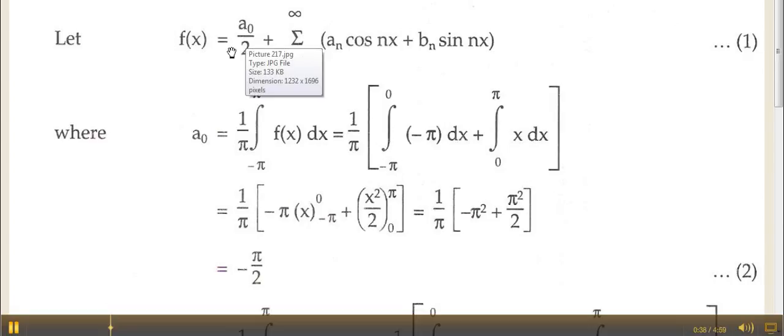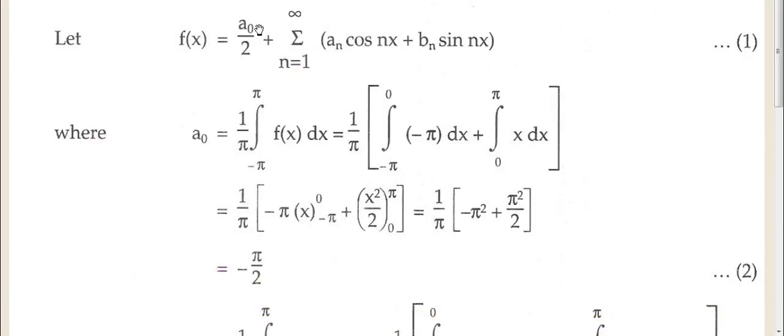Let's write the standard Fourier equation first: a0 by 2 plus summation an cos nx plus bn sin nx, 1 to infinity. Now a0 is 1 by pi, minus pi to pi, f(x) dx. It can be 0 to 2 pi or minus pi to pi, anything which is variable, constantly repeating.